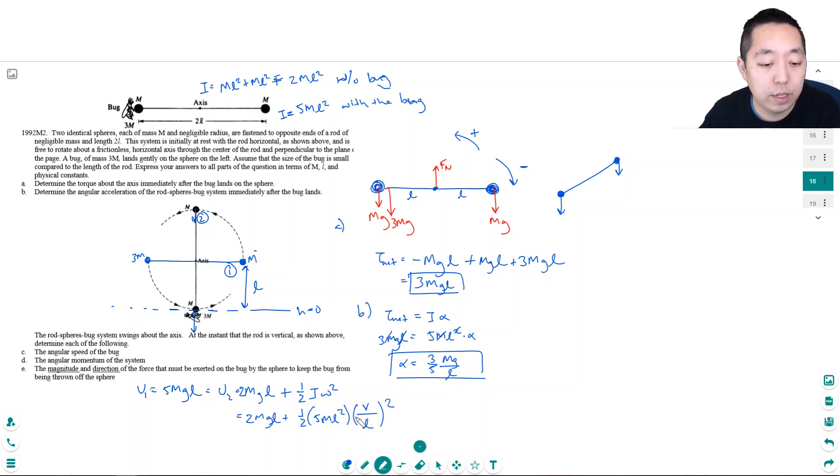If I multiply this out, the l squared is going to cancel with this l. So this is really 2mg·l plus one half times 5m·v squared.